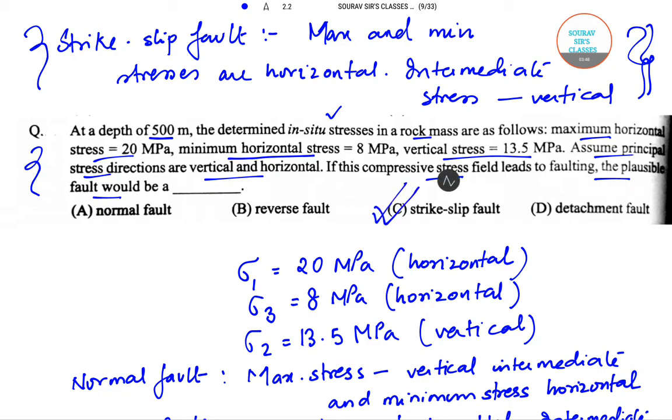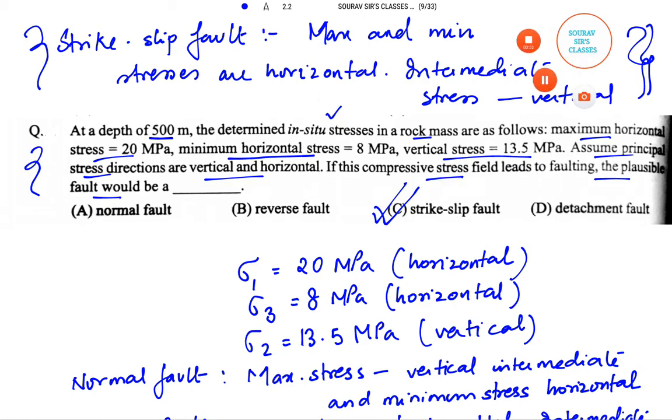Now let us move on to the next question. The question says if a rectangle is deformed into a parallelogram of equal area by simple shear deformation with shear strain given by gamma parallel to abscissa, the displacement matrix will be.